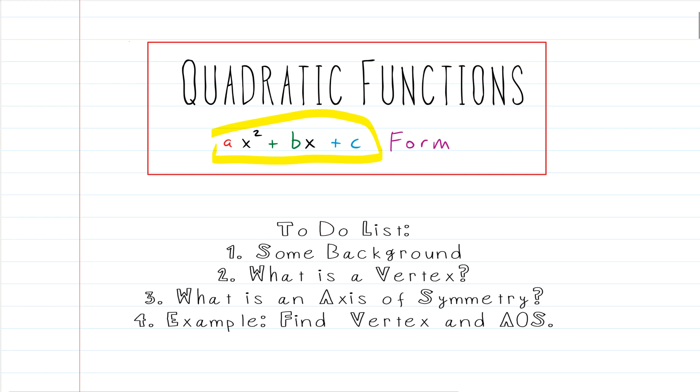Here's our to-do list. First, we'll talk about some background just so you understand where we're coming from. Then we'll talk about what a vertex is. Then we'll talk about an axis of symmetry. Those are the two most distinguishing features of a parabola and or a quadratic function. Then we'll do an example where we find the vertex and the axis of symmetry. AOS is just shorthand for axis of symmetry. Let's get started.